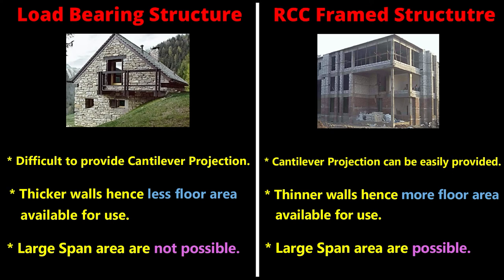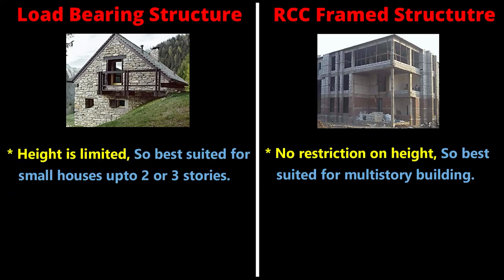A large span area is not possible to construct in load bearing structures, whereas it is possible in RCC frame structures. The height of a load bearing structure is limited, making it best suited for small residential houses up to 2 or 3 storeys. In RCC frame structures there is no restriction on height, so they are best suited for multi-storey and high-rise buildings.